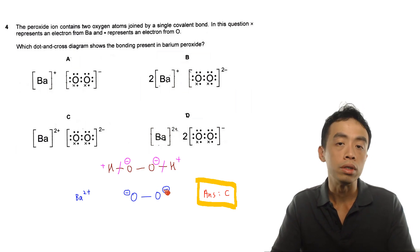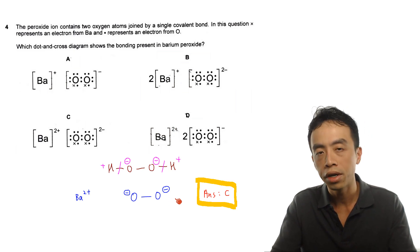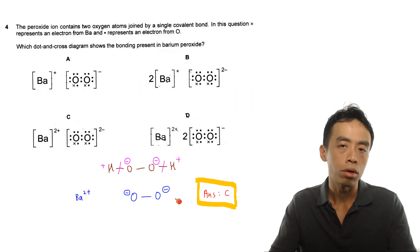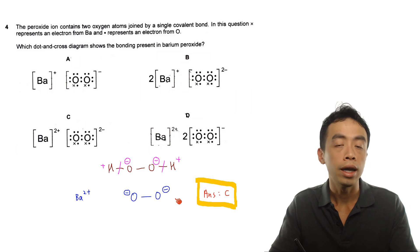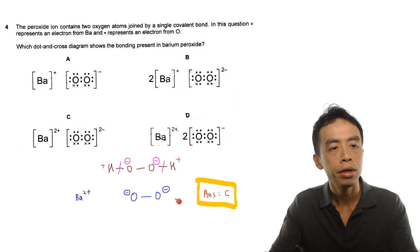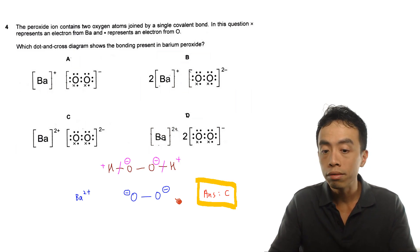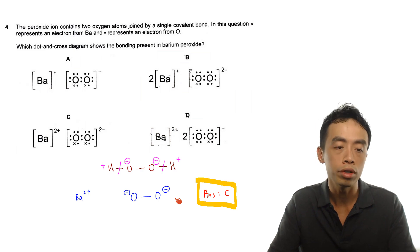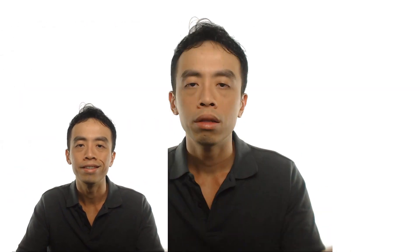I think this way of dealing with it might be a little bit more straightforward because in principle, we should be more comfortable with hydrogen peroxide. So we just deduce based on what hydrogen peroxide is like. So therefore, what your peroxide anion would also look like. So as mentioned, this question is pretty straightforward. This answer to this question would be option C.